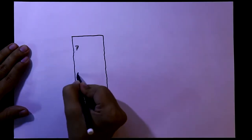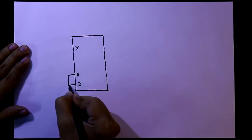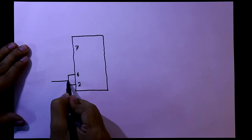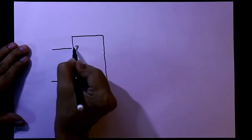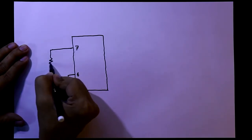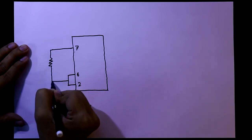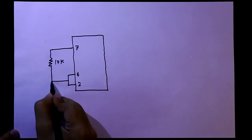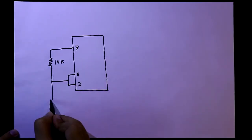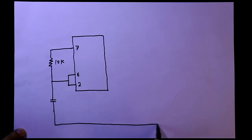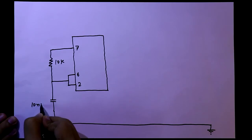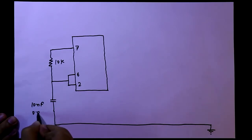Here are pin number 7, 6, and 2 — these pins are connected together. One 10kΩ resistor is connected between pin number 7 and pins 6 and 2. With this resistor, we have to connect one capacitor. Its value is 10nF or 0.01μF.